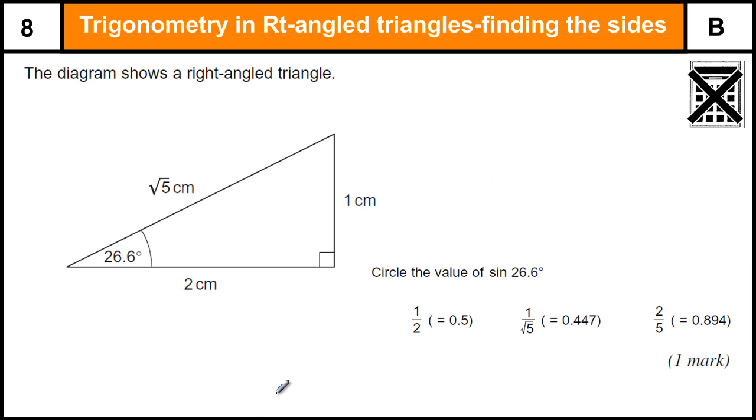Next question, again no calculator. This is only a one mark question. The diagram shows the right angle triangle, circle the value of sin 26.6. It's telling us we're going to use sin 26.6 and that equals the opposite over the hypotenuse.